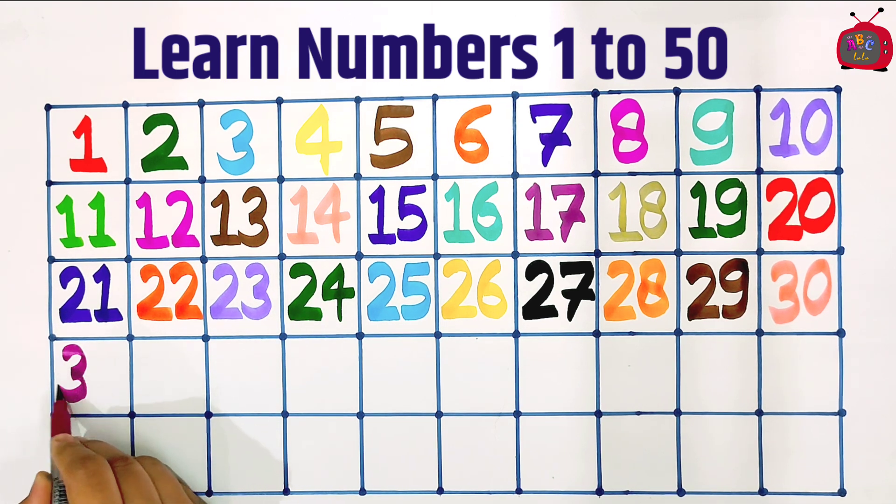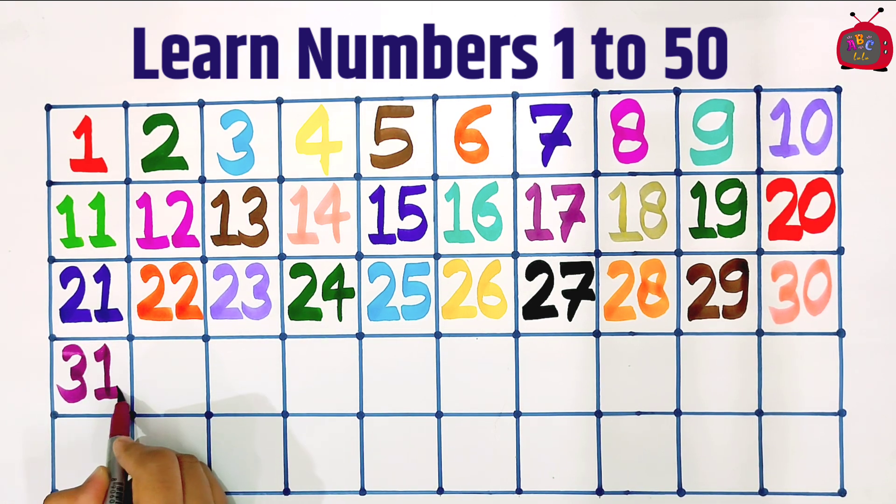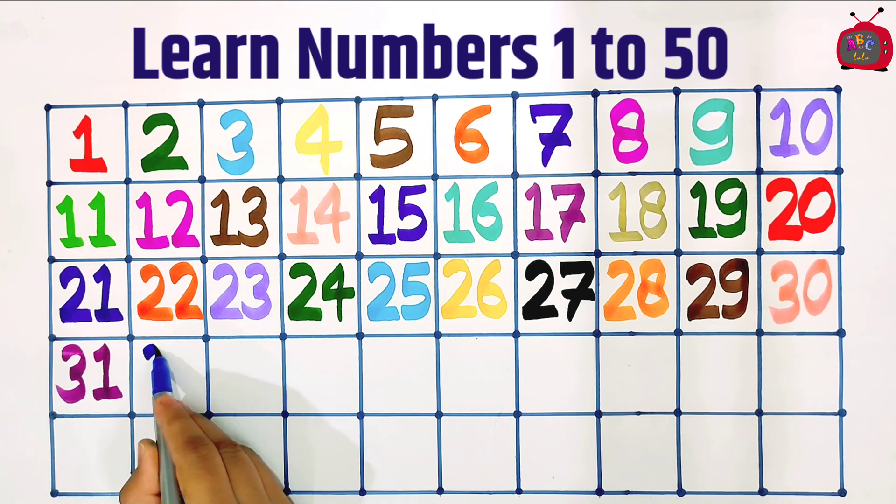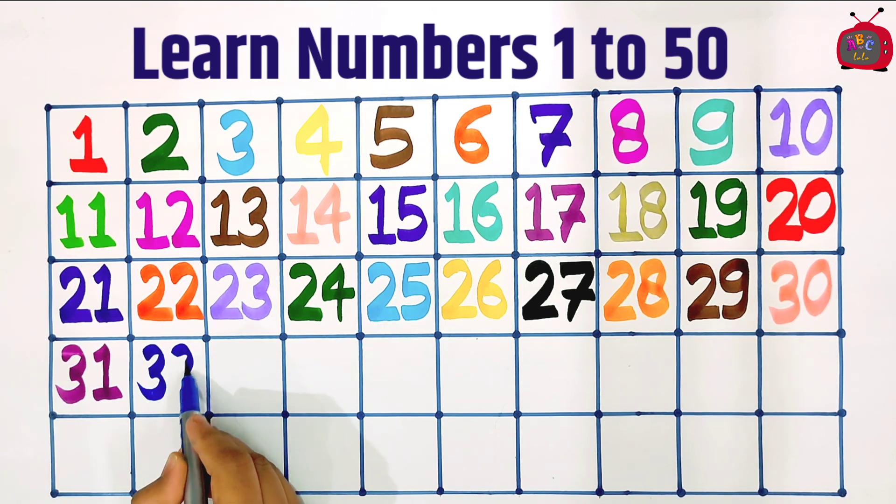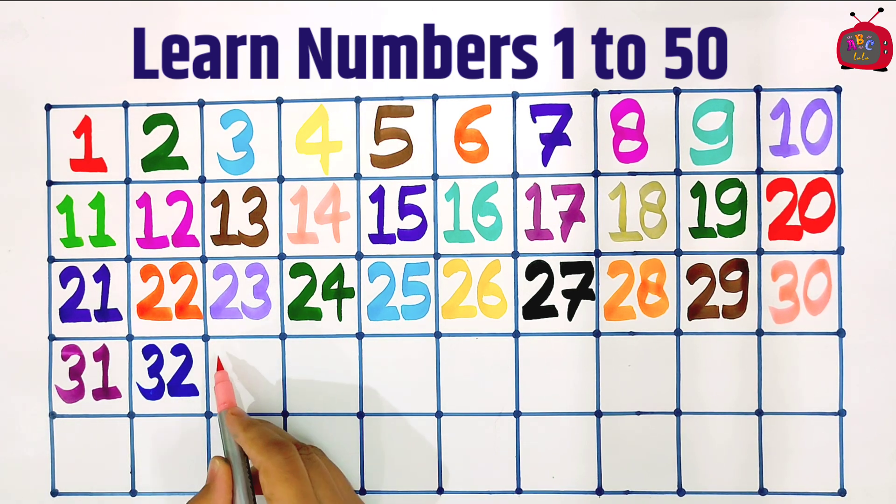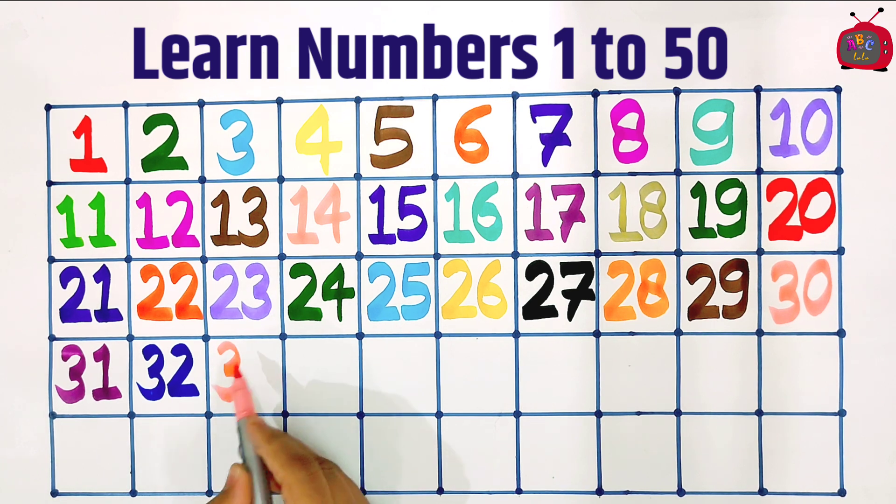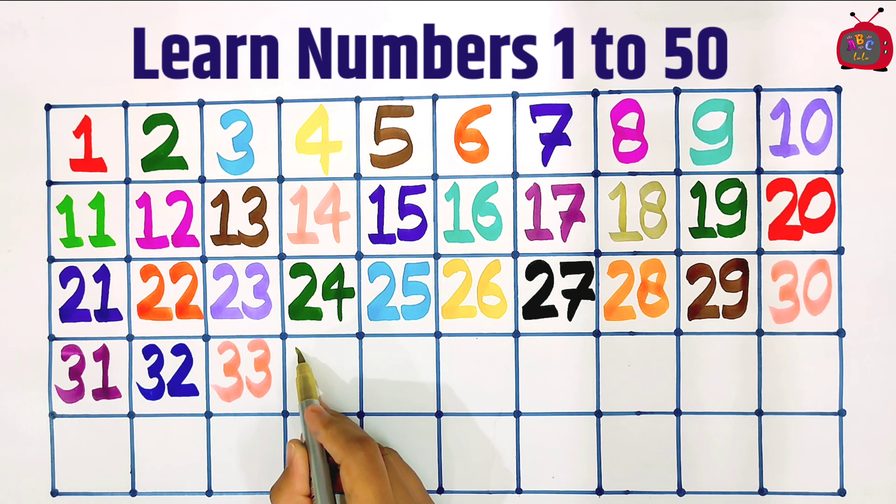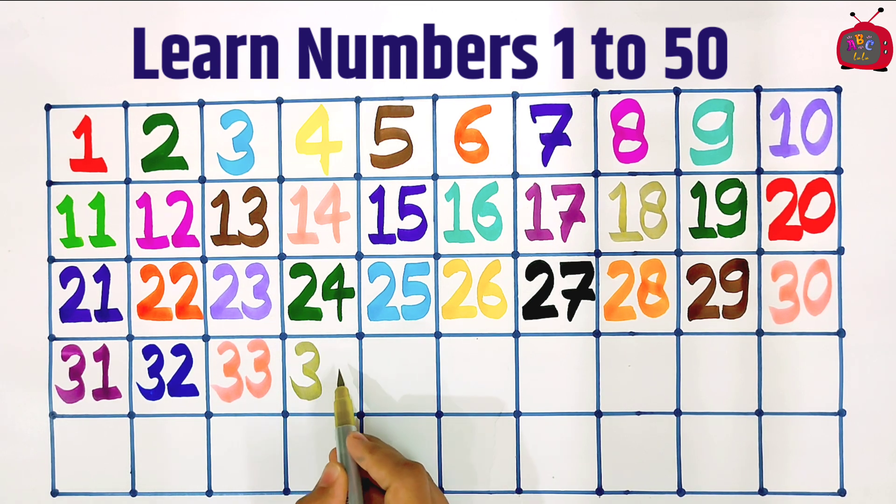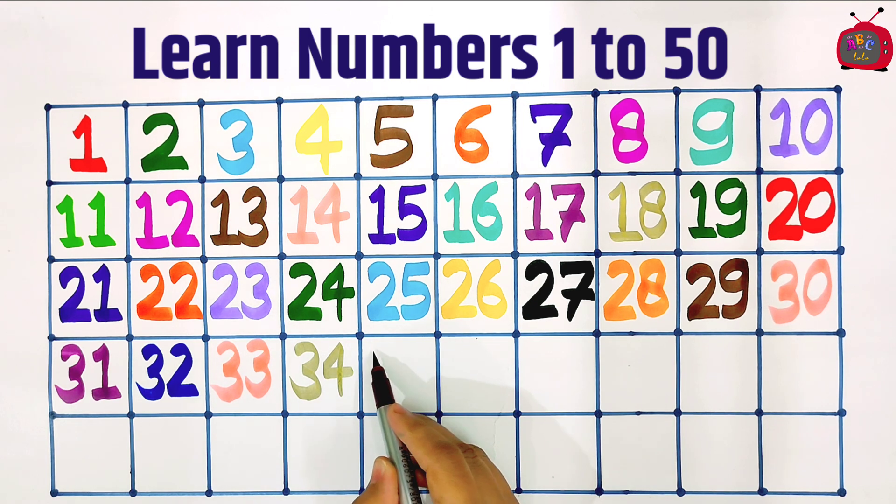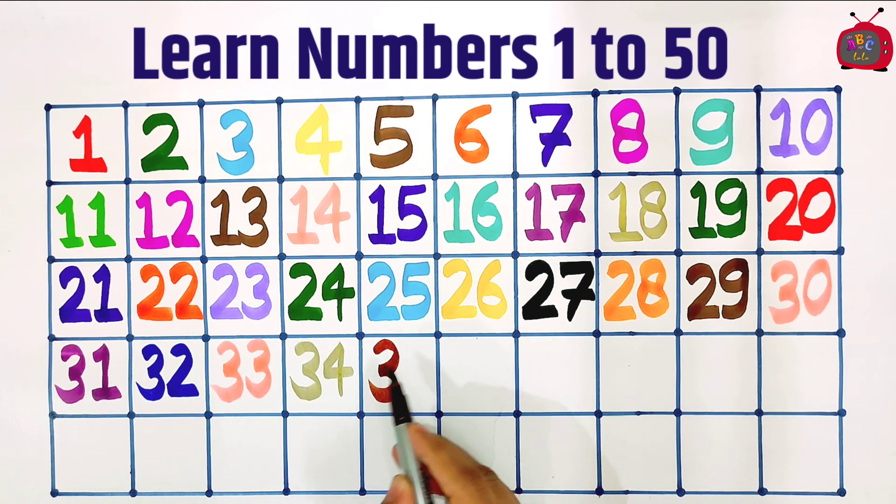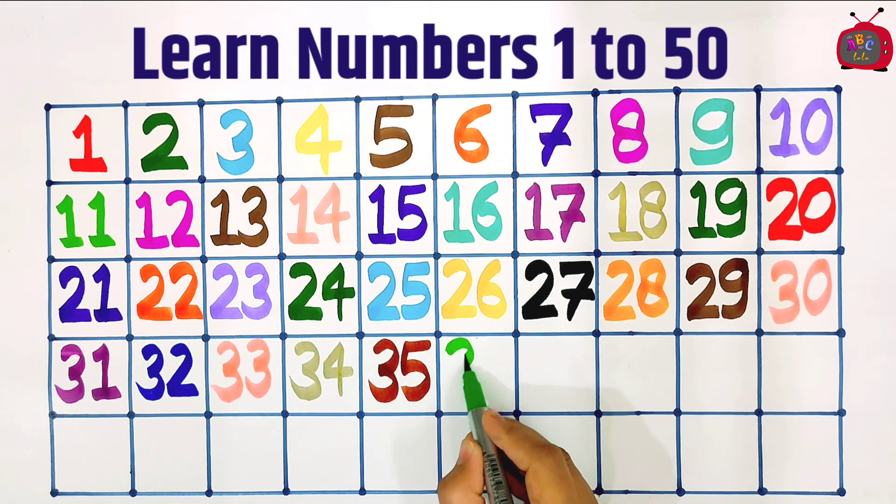Three, one: thirty-one. Three, two: thirty-two. Three, three: thirty-three. Three, four: thirty-four. Three, five: thirty-five.